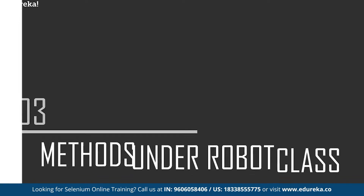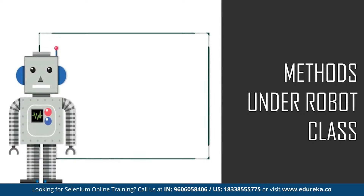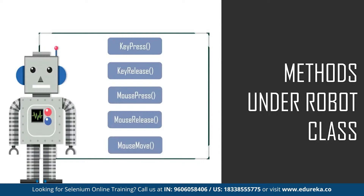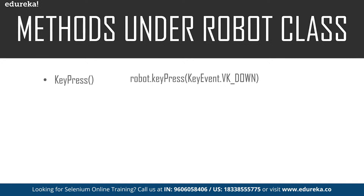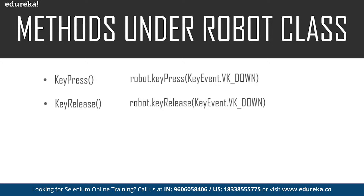Now let's move on to the different methods used while working with the Robot class. There are basically five different methods. The first method is keyPress, which is used to press any key on the keyboard — for example, it will press the up key. Next is the keyRelease method, which is used to release the pressed key — for example, it will release the pressed Caps Lock key.